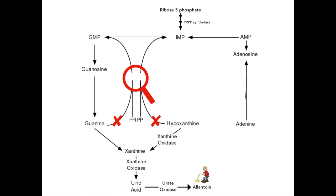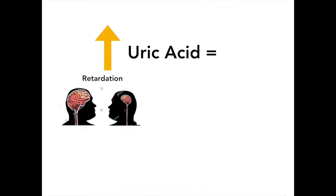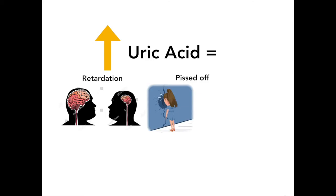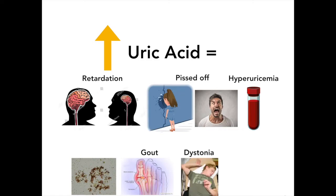There is actually a name for this deficiency: it's called Lesch-Nyhan syndrome. The conversion of these free bases to uric acid causes a buildup of uric acid, which can manifest as symptoms such as intellectual disability, self-mutilation, aggression, hypertension, hyperuricemia, orange sand in diapers in babies — which is actually sodium urate crystals — gout, dystonia, and macrocytosis.